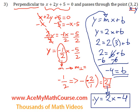And that is the equation of the line that is perpendicular to x plus 2y plus 5 equals 0 and passes through the point 3 and 2.